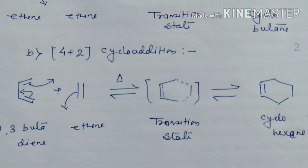The 4+2 cycloaddition takes place in the presence of heat, whereas the 2+2 reaction takes place in the presence of light. Why this is so we have to understand. In the next lecture we will discuss the mechanism, known as the Woodward-Hoffmann selection rule, also known as the frontier molecular orbital rule.